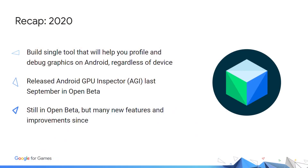Before we dive into the new stuff, I'd like to give a quick recap. We set out last year with a vision of building a single tool that will help developers profile and debug graphics on Android regardless of device. As a result, we built Android GPU Inspector, or AGI for short, collaborating with many top studios and released it in open beta last year. Since then, we've greatly improved the stability and the feature set of the tool.